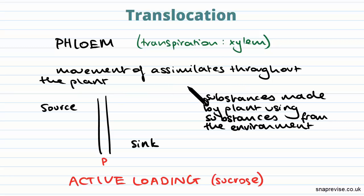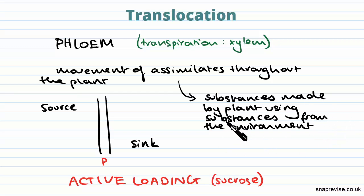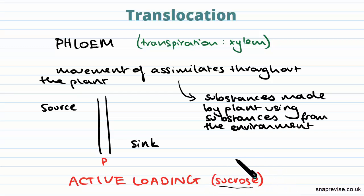Assimilates are substances made by the plant using substances from the environment. In this particular case we'll be looking at the assimilate sucrose, because that is really the main one.